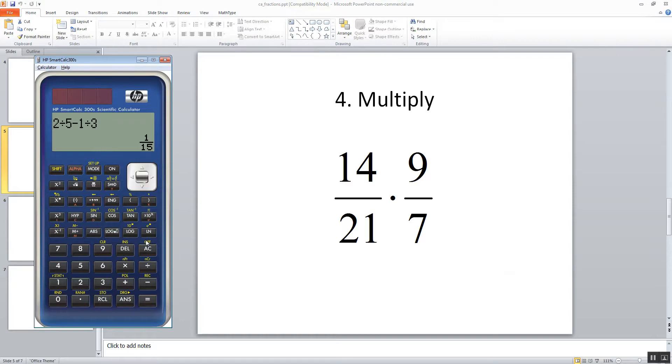Now multiplication. I'm going to have 14 divided by 21 times 9, let's try it again. 14 divided by 21 times 9 divided by 7. And then equals, and that gives us our answer of 6 7ths.